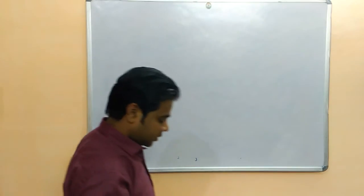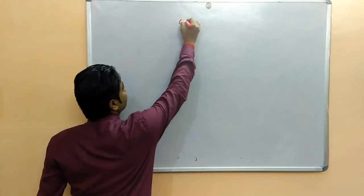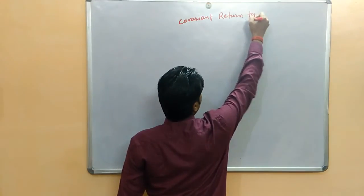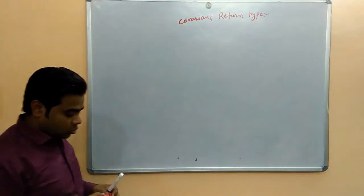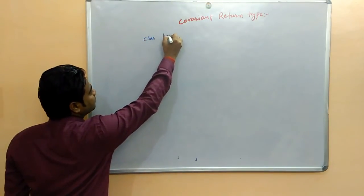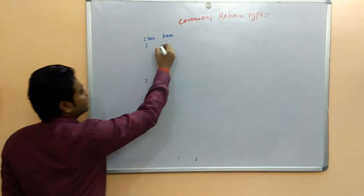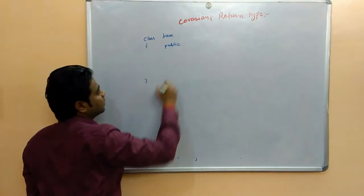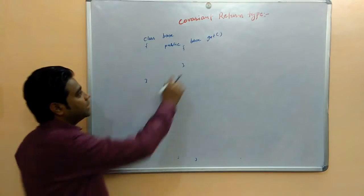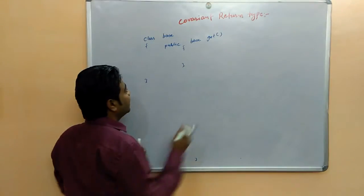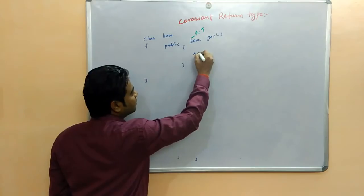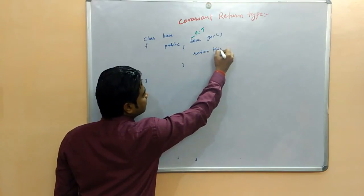Co-variant return type — in the case of method overriding, today's topic is co-variant return type. Let's suppose we are using class base. Inside it, public base getMethod — the return type is base type. We return 'this'.